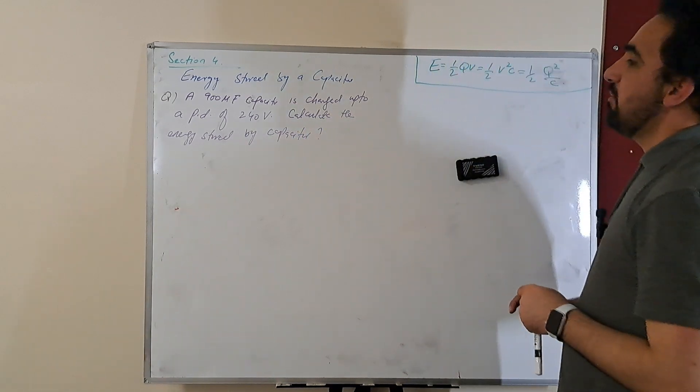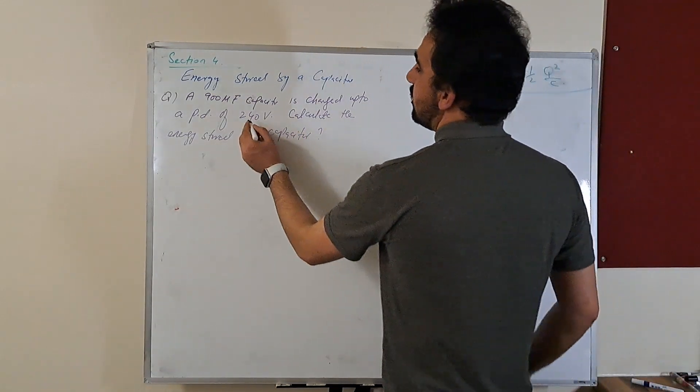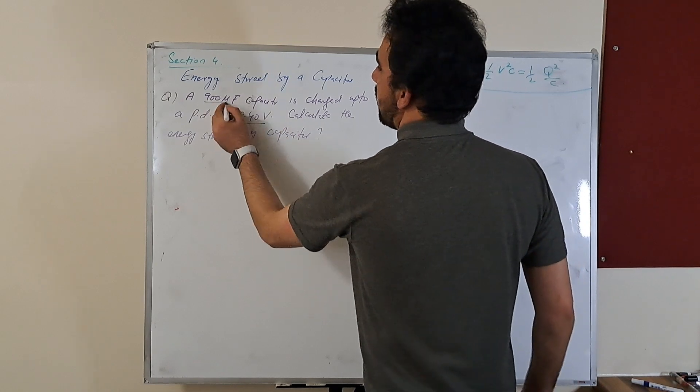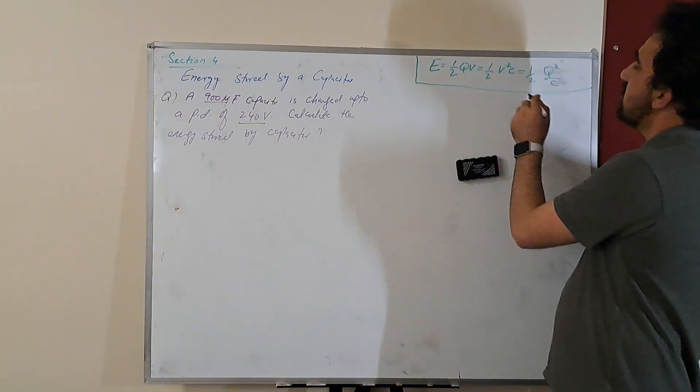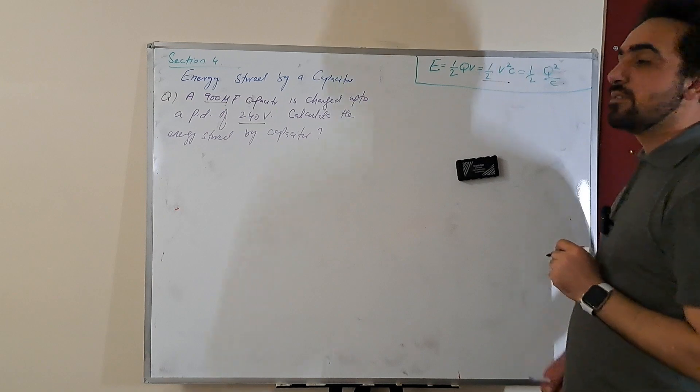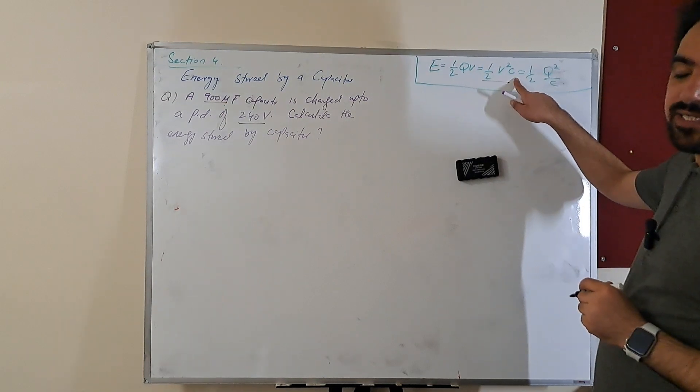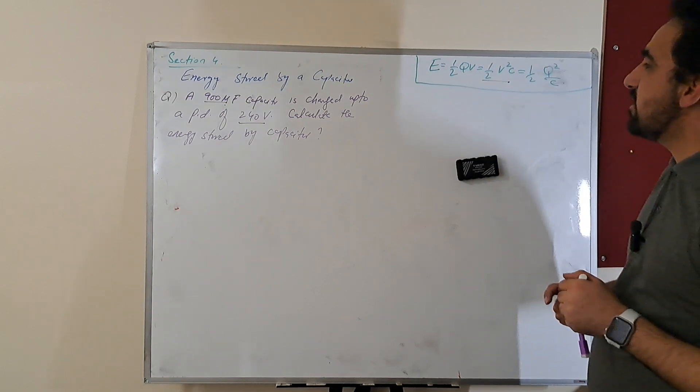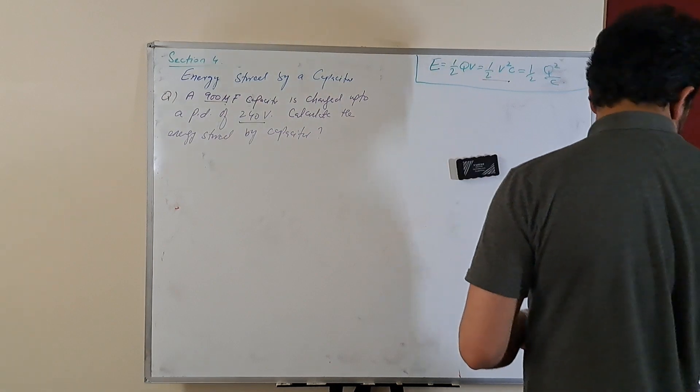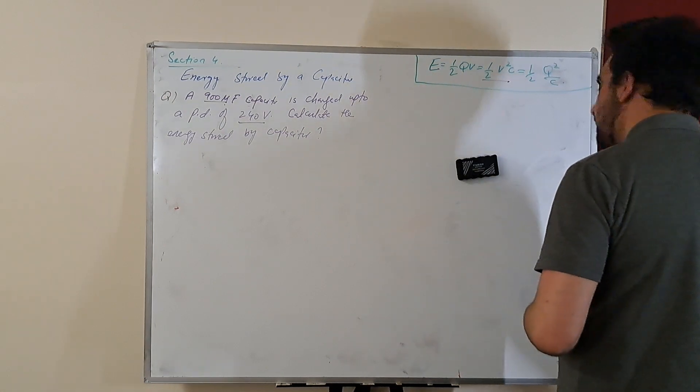Because we got the potential and we got the capacitance, this is the formula that we can use. Here we have potential difference and the capacitance and we can find the desired result.